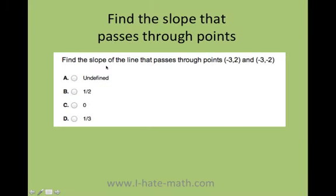So we have this question. Find the slope of the line that passes through points (-3, 2) and (-3, -2).